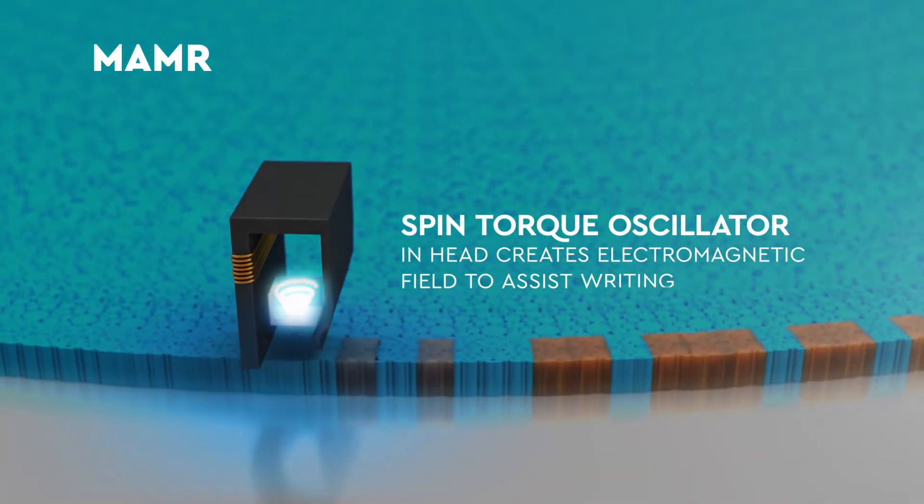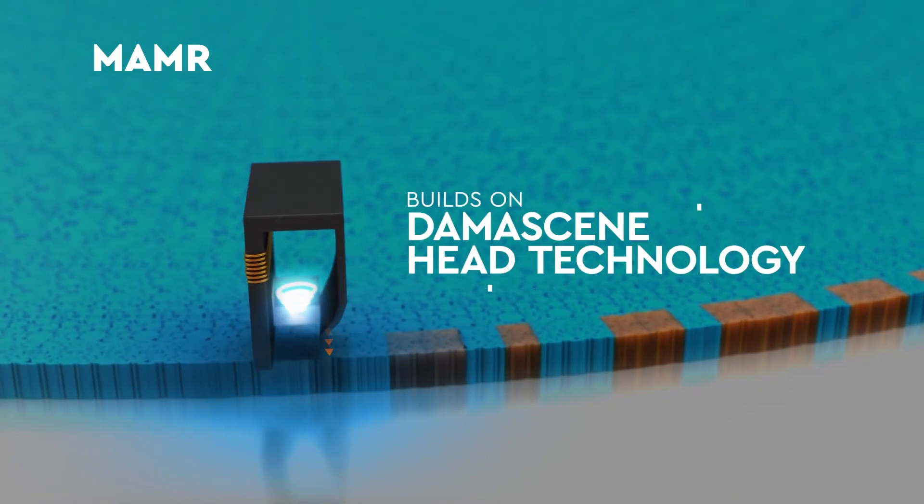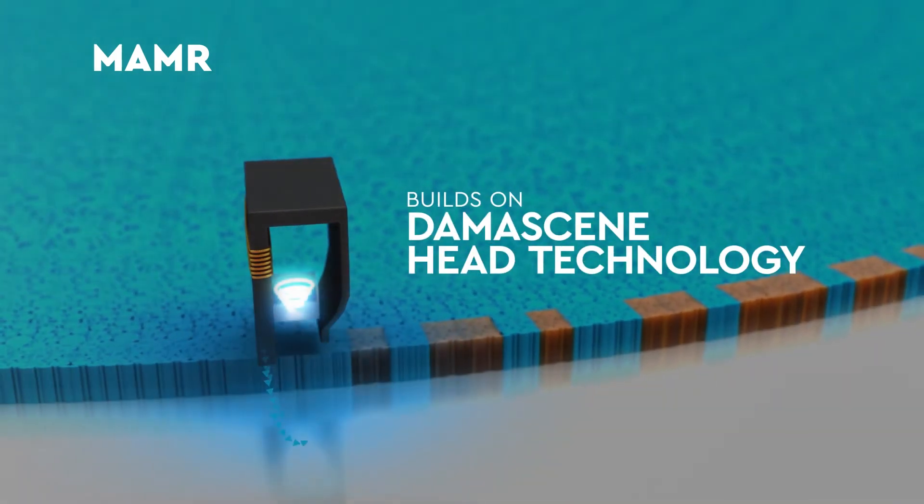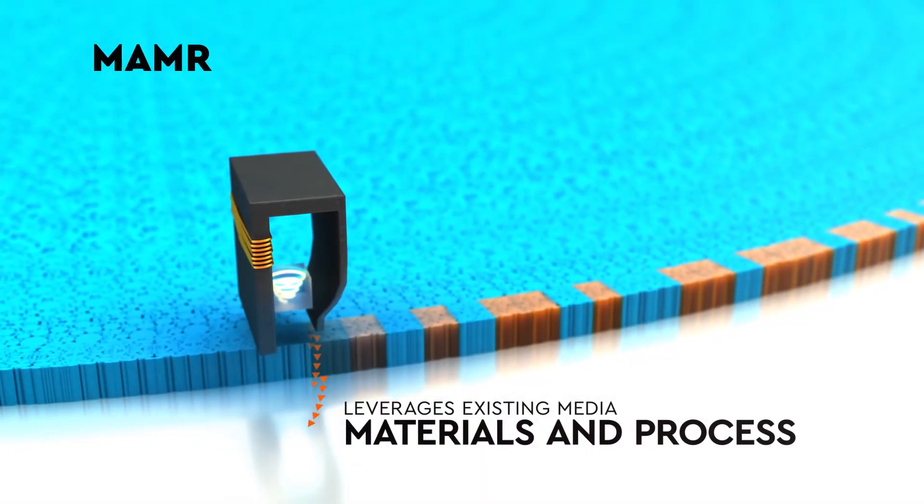MAMR technology uses a spin-torque oscillator, or STO, located near the write pole of the head. The STO creates an electromagnetic field that allows data to be written to the media at a lower magnetic field.